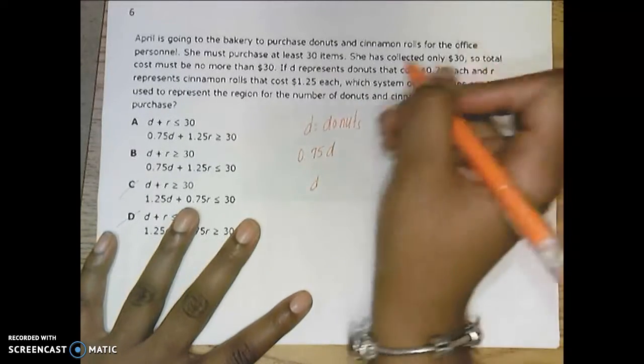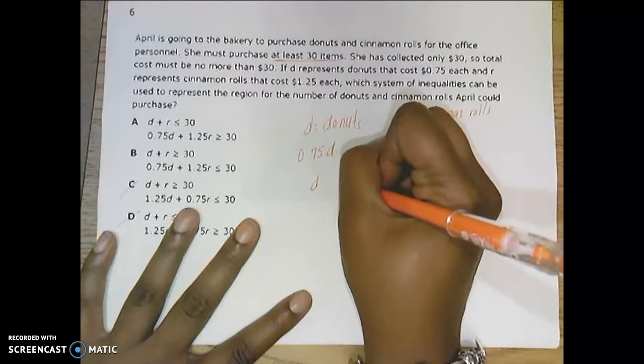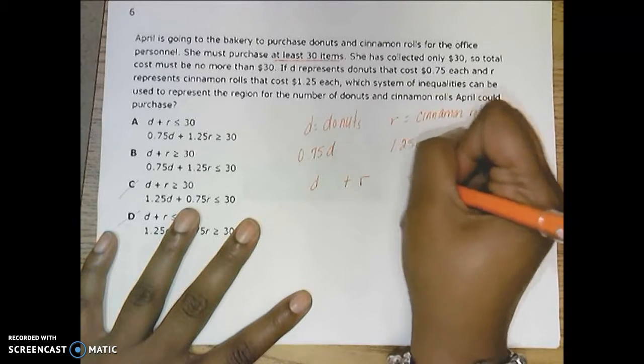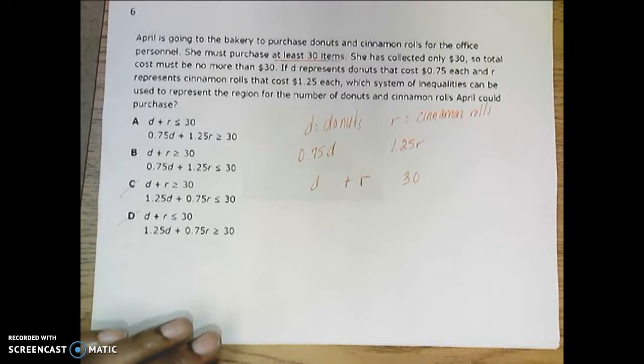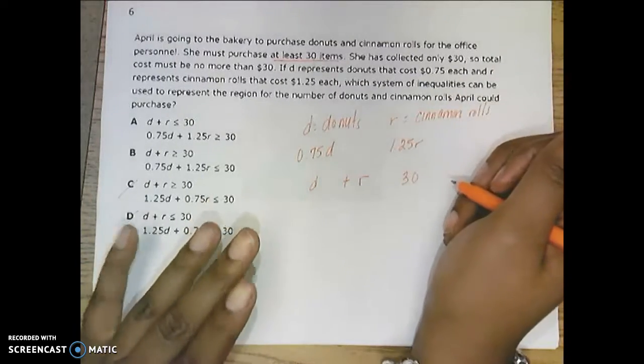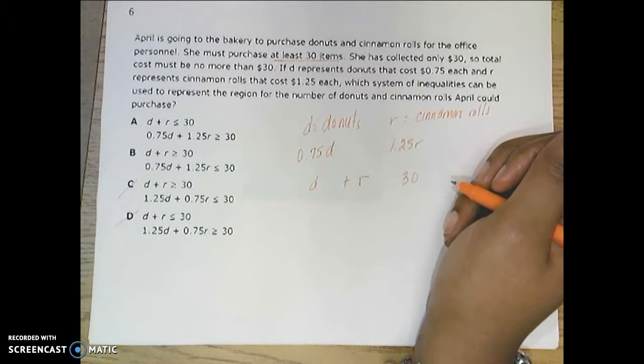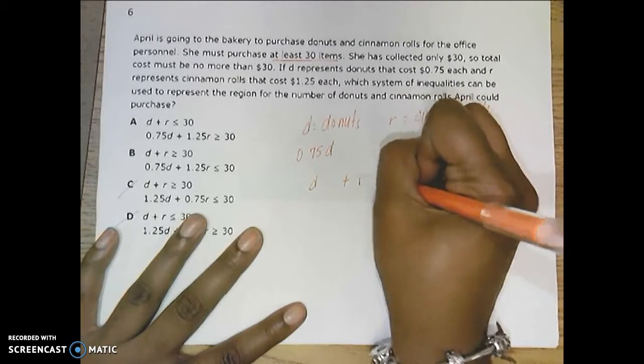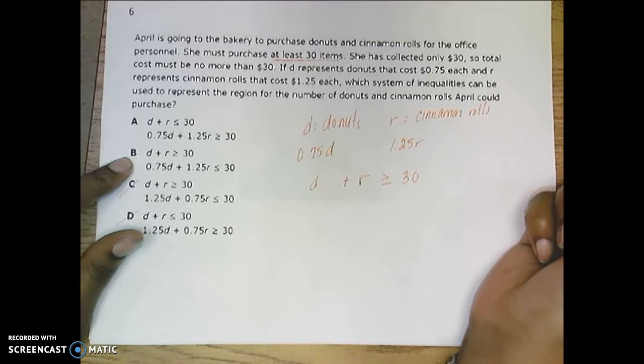She needs to get at least 30 items. So the donuts plus the cinnamon rolls must be at least 30. Remember, at least is a reference to she can have 30, she can have 31, but she can't have 29. So we know that it has to be greater than or equal to 30. Just knowing that we know what the final answer is.